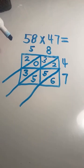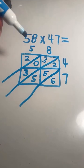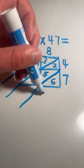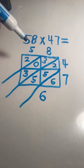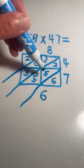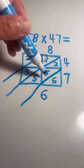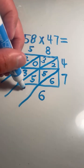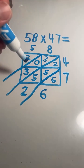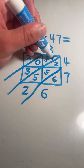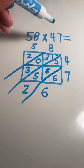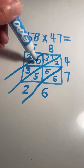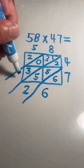Now we are going to add the numbers along the diagonal lines. We have a 6 in the ones place. Next we have to add 2 plus 5 plus 5: 2 plus 5 is 7, plus 5 is 12. Anytime we have a sum or product that's 10 or more, we have to regroup. So 2 in the tens place, and the 1 is going to get carried over to the hundreds place. 1 plus 3 equals 4, plus 0 equals 4, plus 3 equals 7.